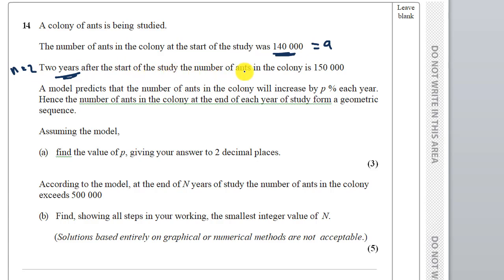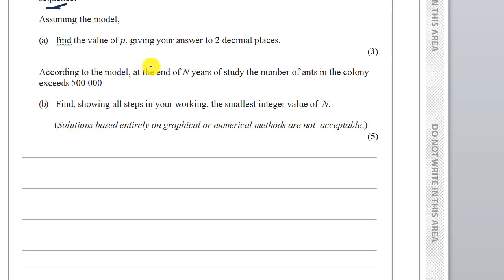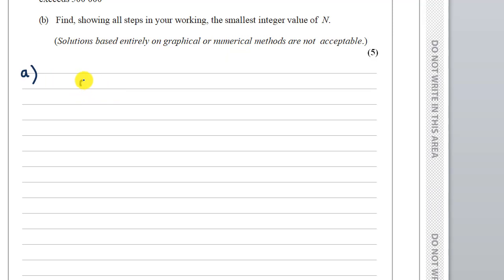At the start of the study the number of ants is 150,000. A model will predict that the number of ants in the colony will increase by B percent each year, hence the number of ants at the end of each year forms a geometric sequence. Assuming the model, find the value of B, giving your answer to one decimal place. So we have A equal to 140,000.